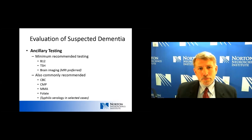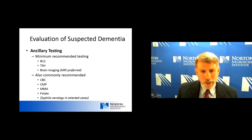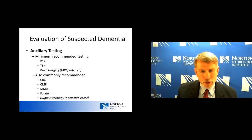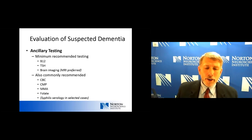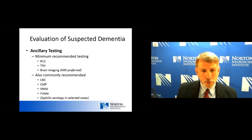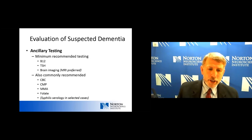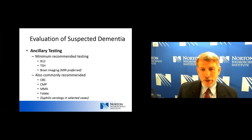For ancillary testing, based on the most recent guidelines, for someone over age 65 with a fairly typical, gradually progressive history consistent with dementia, the testing can be relatively simple — as short as a B12 level, a TSH, and brain imaging. CT or MRI — MRI is preferred. Most of us would also recommend a minimum blood workup including a blood count, a metabolic profile, and a methylmalonic acid level, which helps increase sensitivity in looking for B12 deficiency.